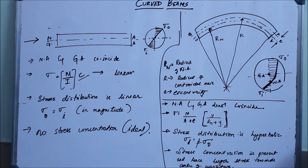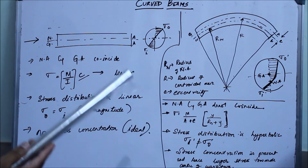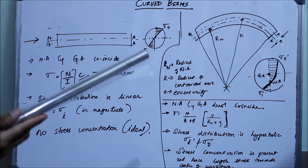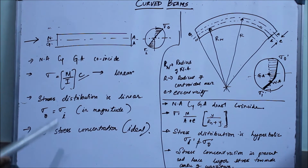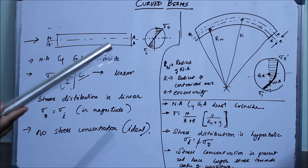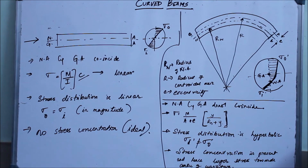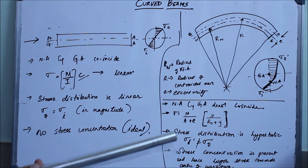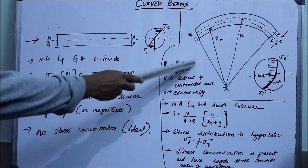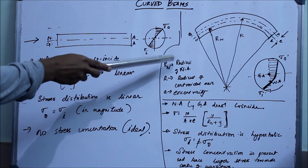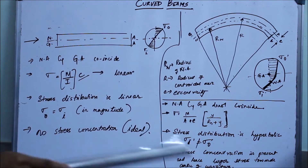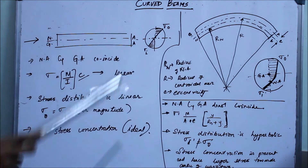Since the beam is curved, a stress concentration factor is present. In straight beams there is no curvature, so there is no stress concentration factor. But in curved beams, stress raisers are present, and larger stresses are induced towards the center of curvature. So the stress on the inner side, σ_i, is greater than the stress on the outer side, σ_o.